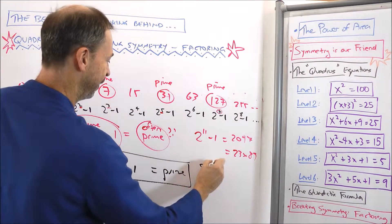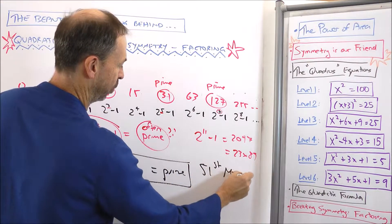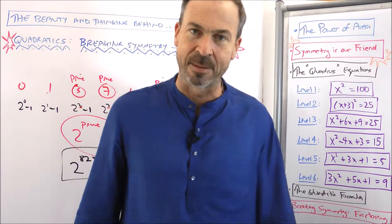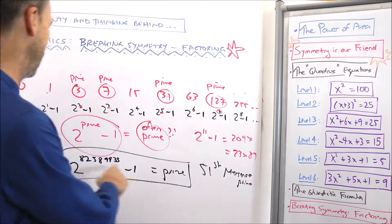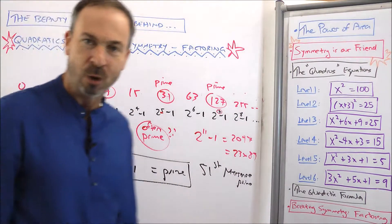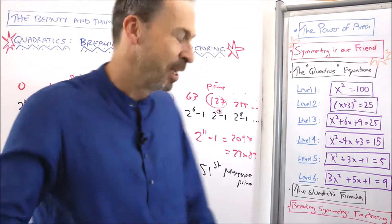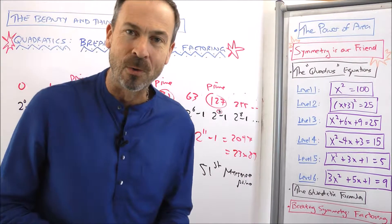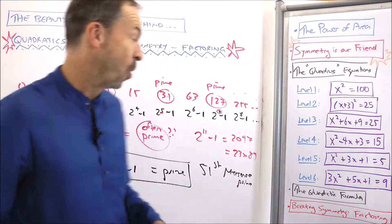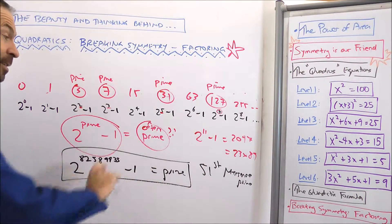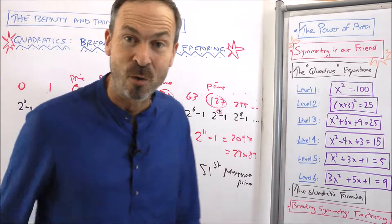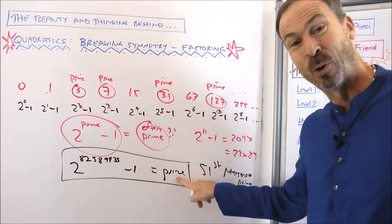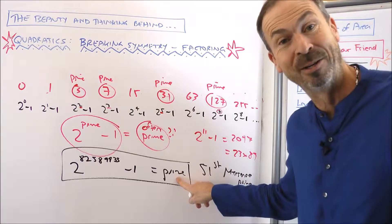This is the 51st example of what's called a Mersenne prime. Mersenne was the person who first started thinking about this seriously. This is the largest currently known prime as of the taping of this video — 2 to a prime minus 1, again, is prime. But no one knows if there's another one to be found. Maybe the list stops now. Unsolved research question: does the list of Mersenne primes keep going or does it stop? No one knows.